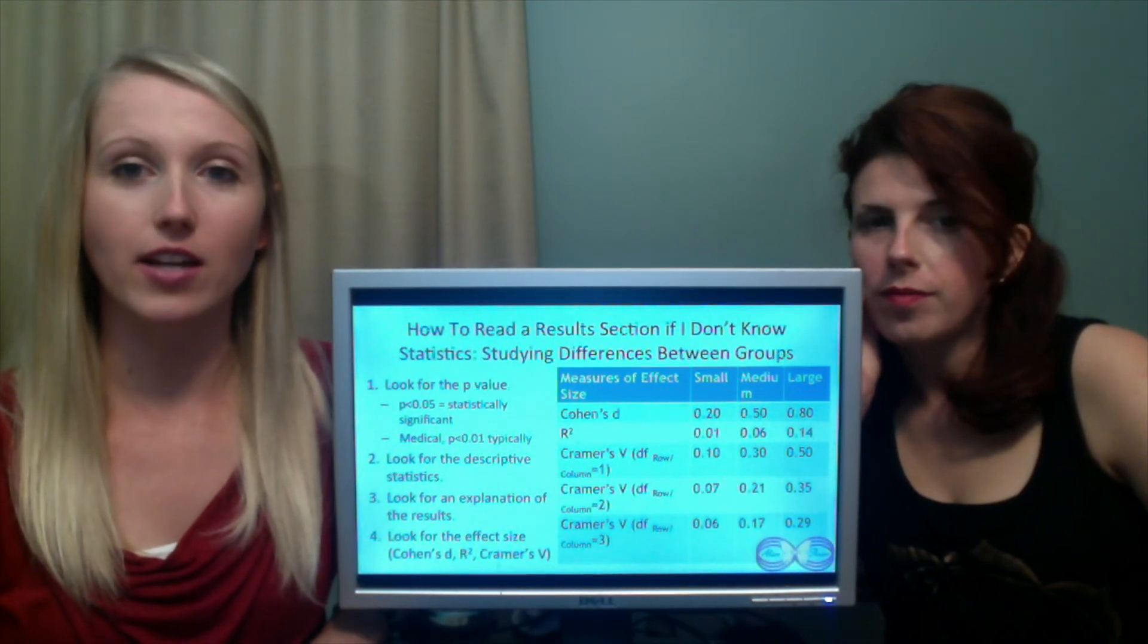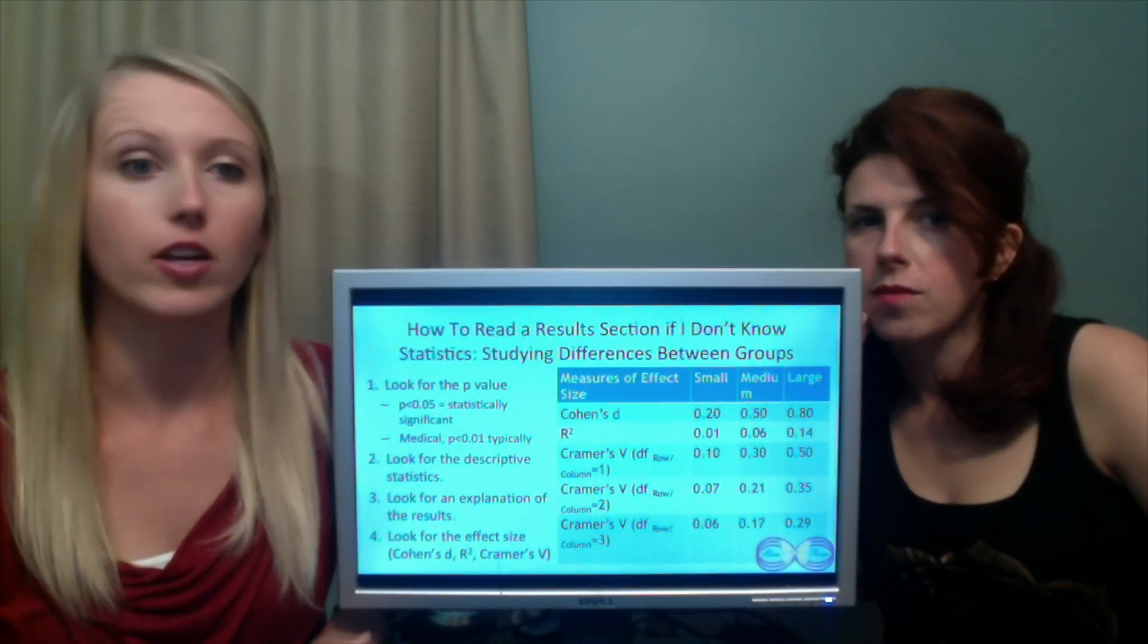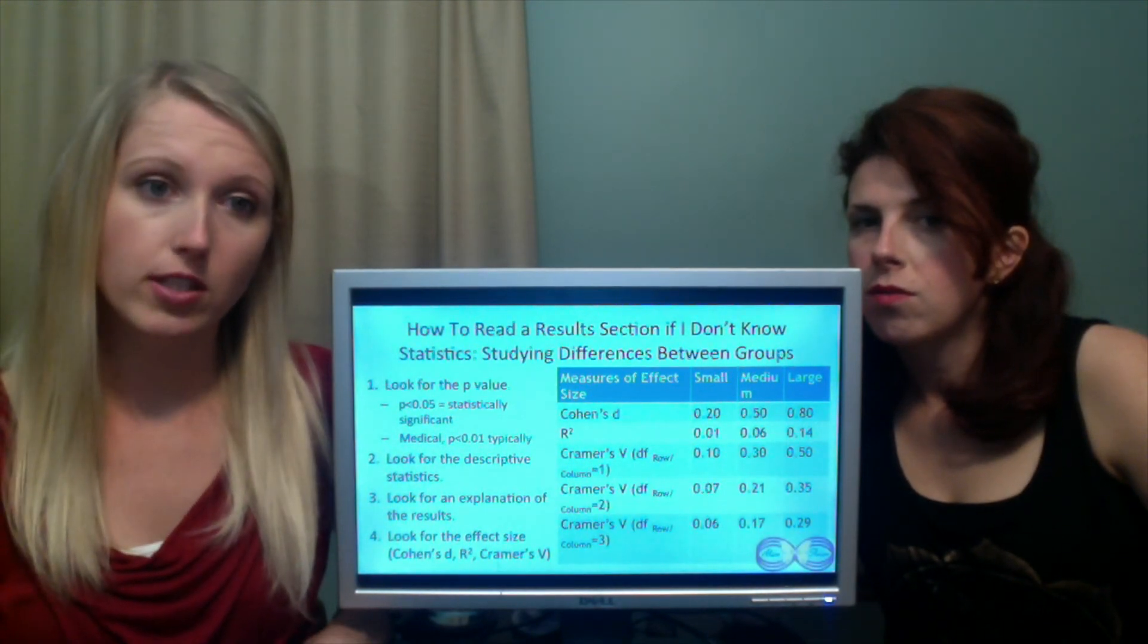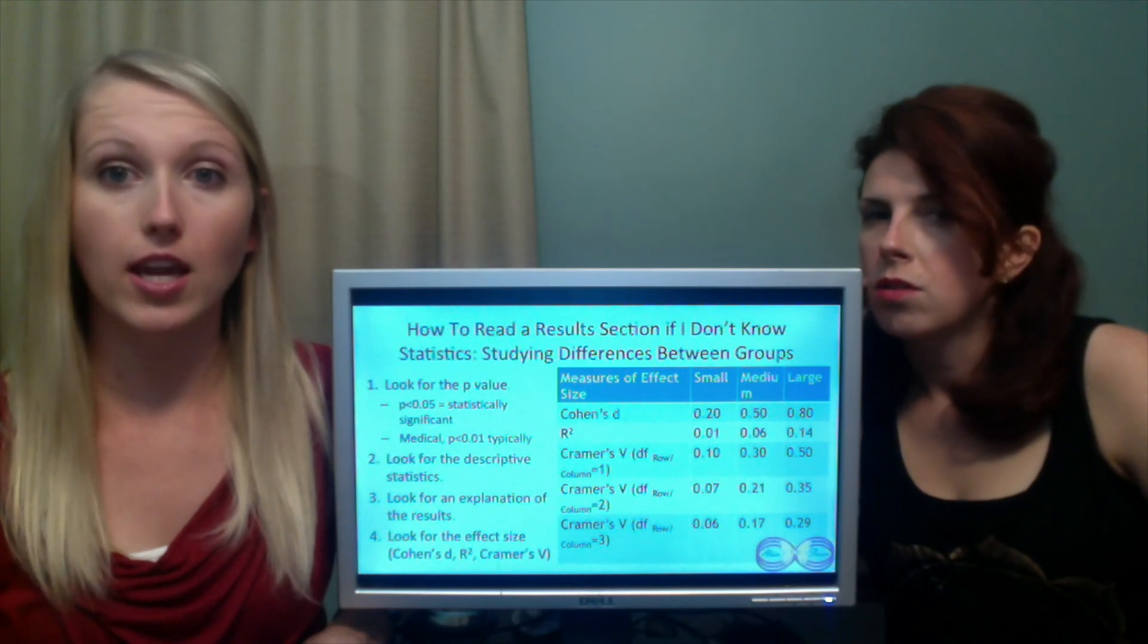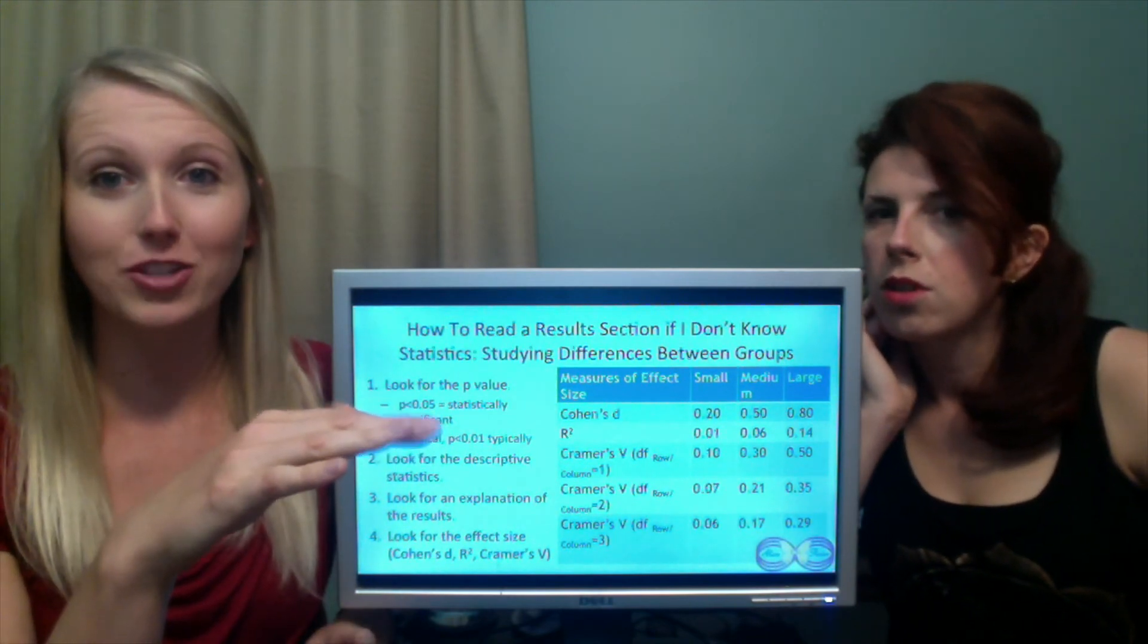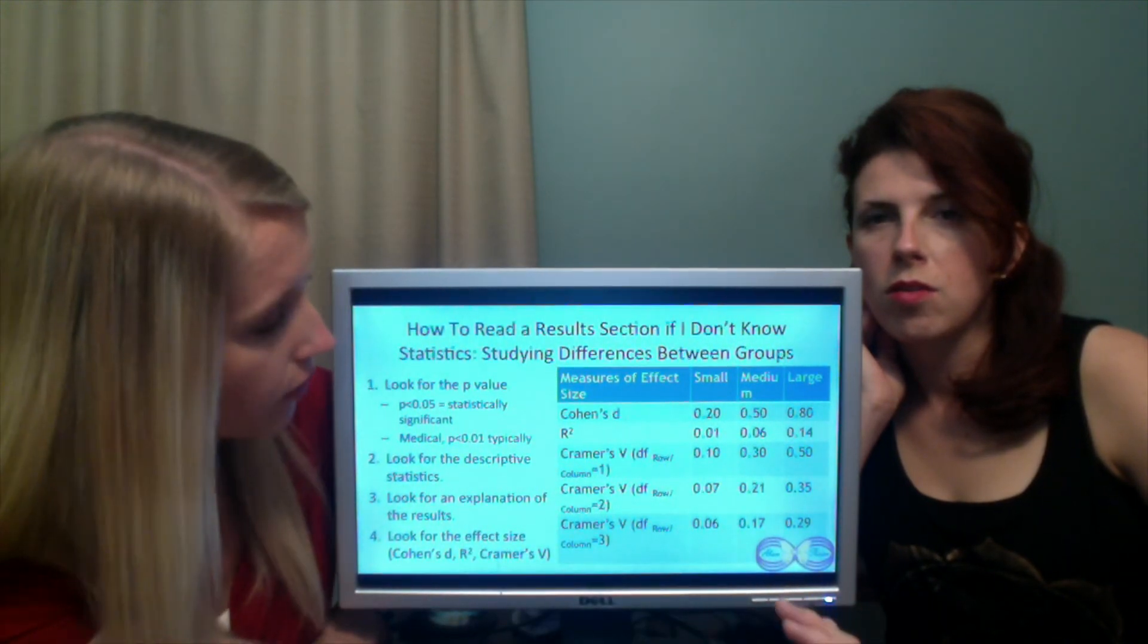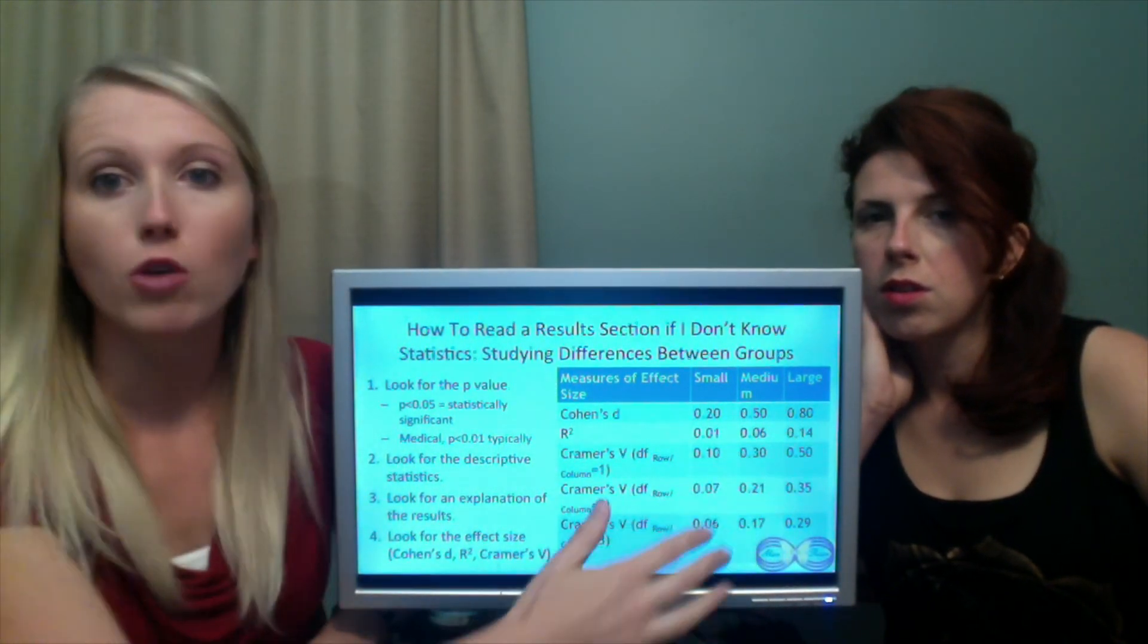What about differences? If we're looking at studies that are showing whether or not an intervention worked or medication worked, you're going to look for your p-value. Remember, the lower the better. You want it to definitely be under 0.05. That means there's a 5% chance the study's wrong. Look for your descriptive statistics. Look for an explanation of the results. And look for the effect size. So this is basically saying how big of an impact did your medication work? Are you at 5 for a reduction in cholesterol or are you at 50? We need to know this.